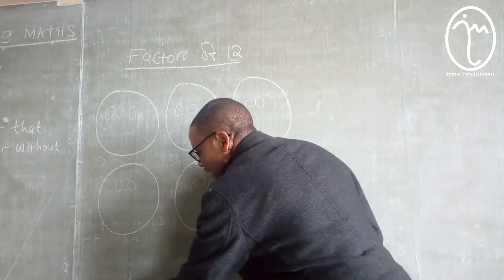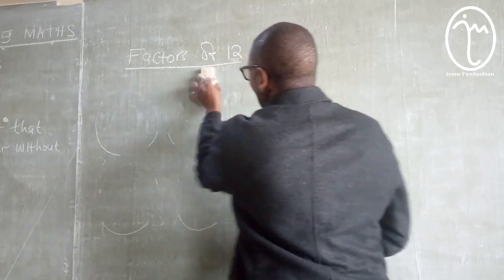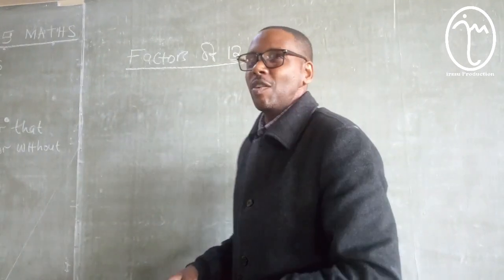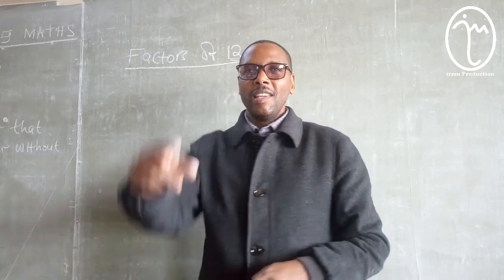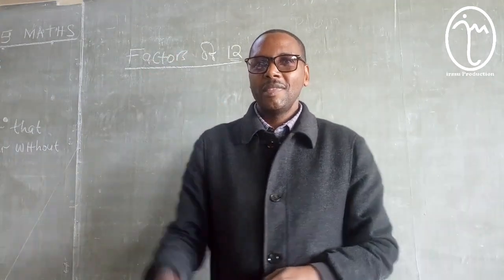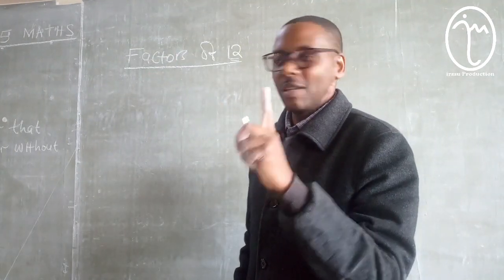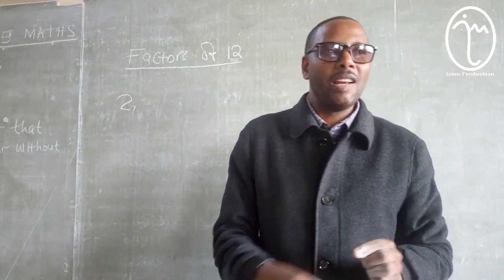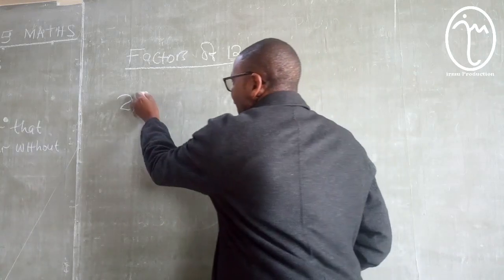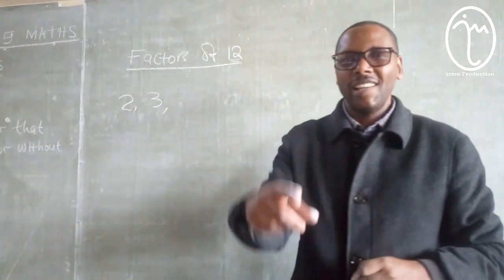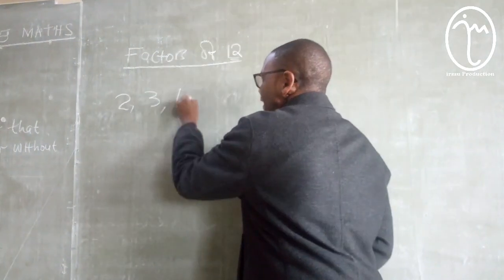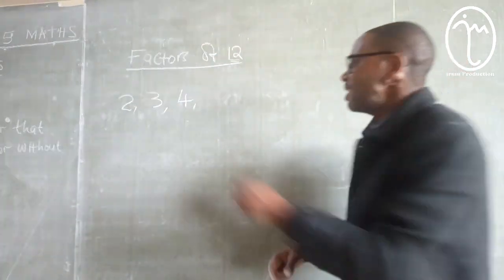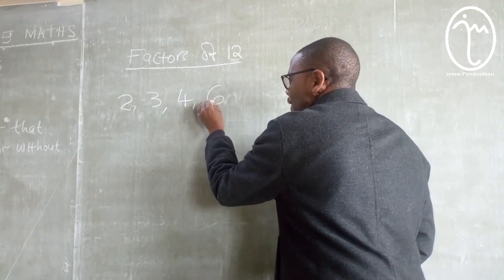Now I want us to summarize all the factors of 12. Who can tell us the factors of 12? The factors so far are: 2, 3, 4, and 6 is also a factor of 12.